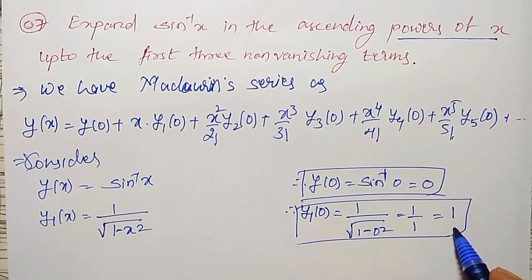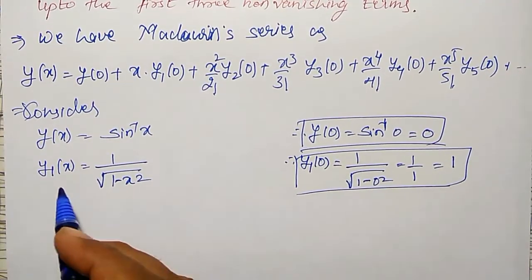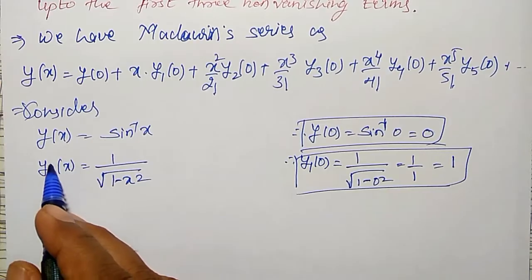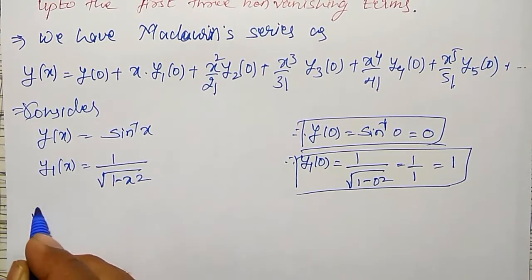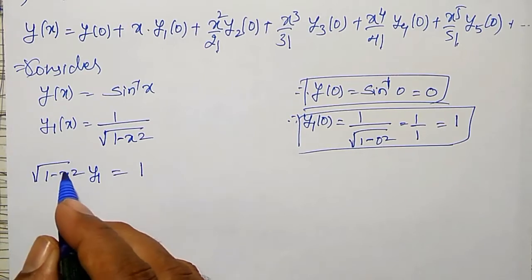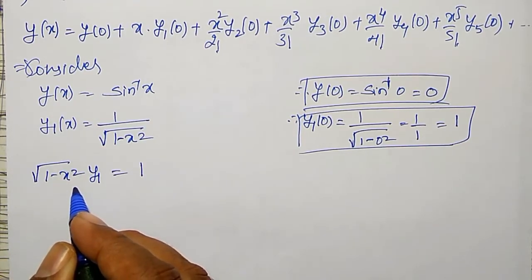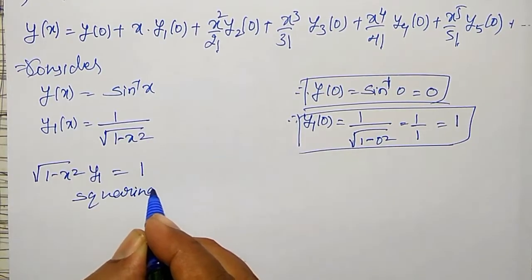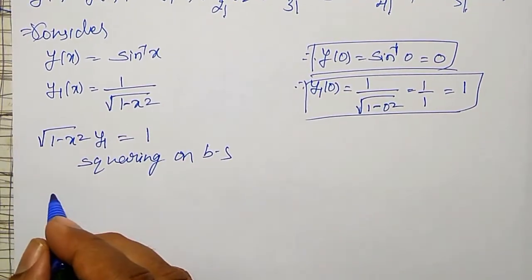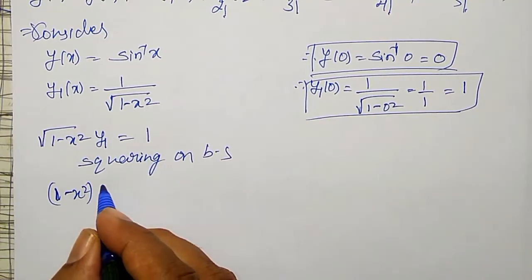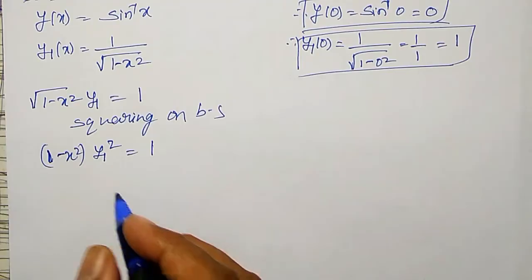That gives us one non-vanishing term; we need three total. To find y₂, directly differentiating will be very lengthy. Instead, I rearrange: √(1 − x²)·y₁ = 1. To avoid the square root, I square both sides to get (1 − x²)·y₁² = 1, and then differentiate with respect to x.